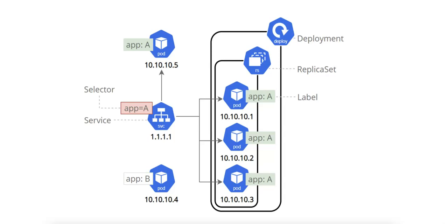What is a Kubernetes deployment? A deployment is a resource that defines how an application or set of pods should be deployed and managed over time. It handles the creation, scaling, and updating of pods, ensuring that the desired number of replicas are running and that any updates or changes to the application are applied in a controlled manner.